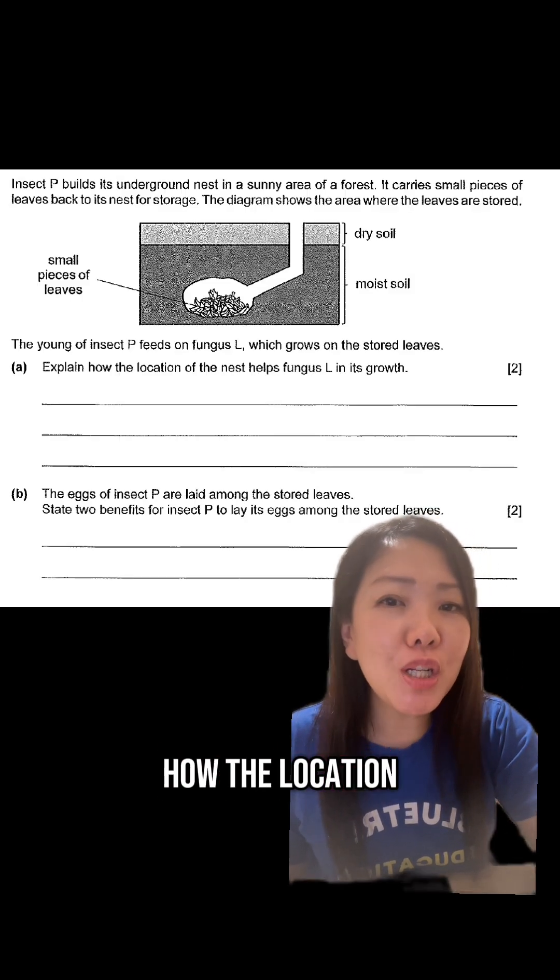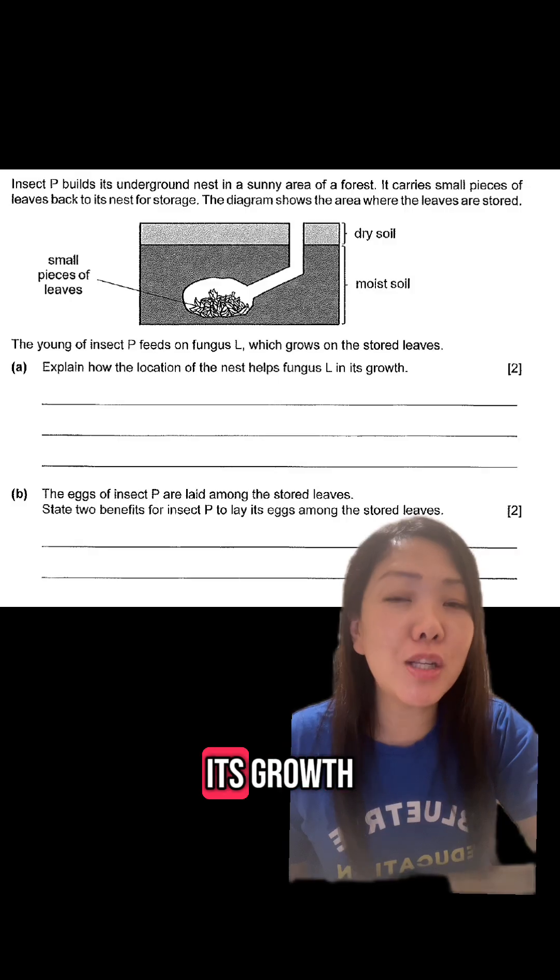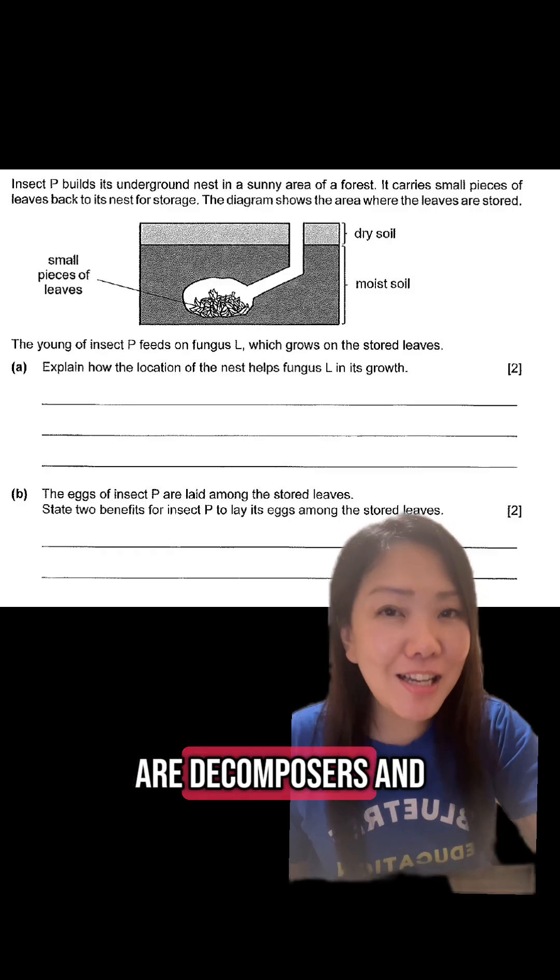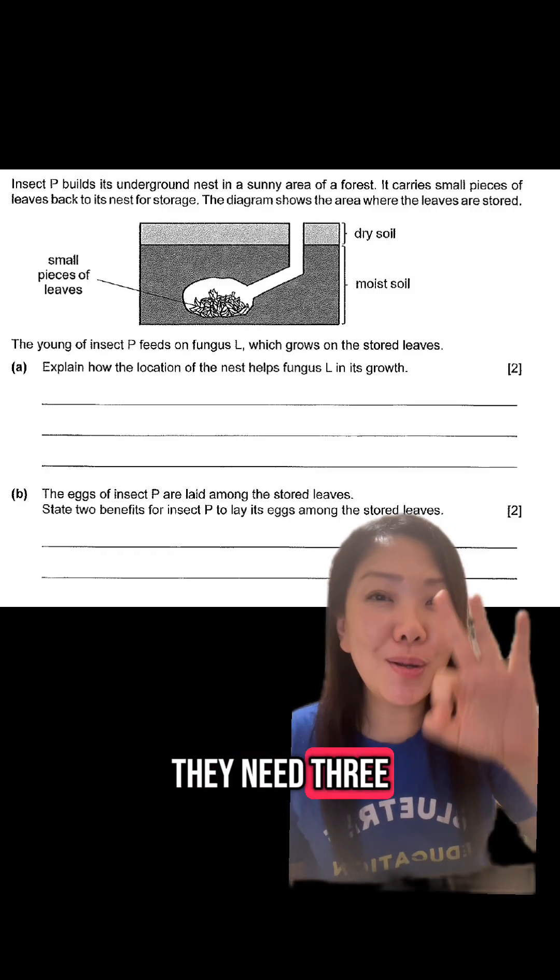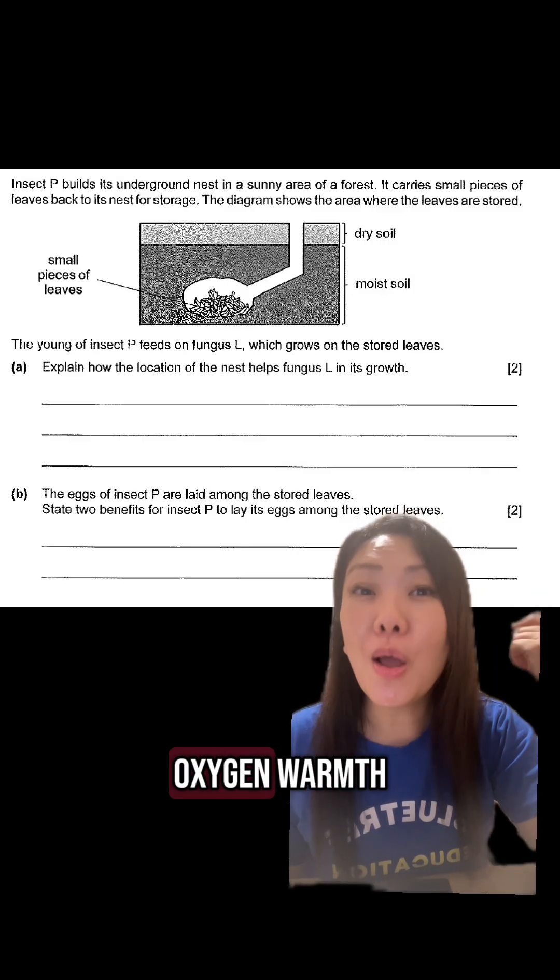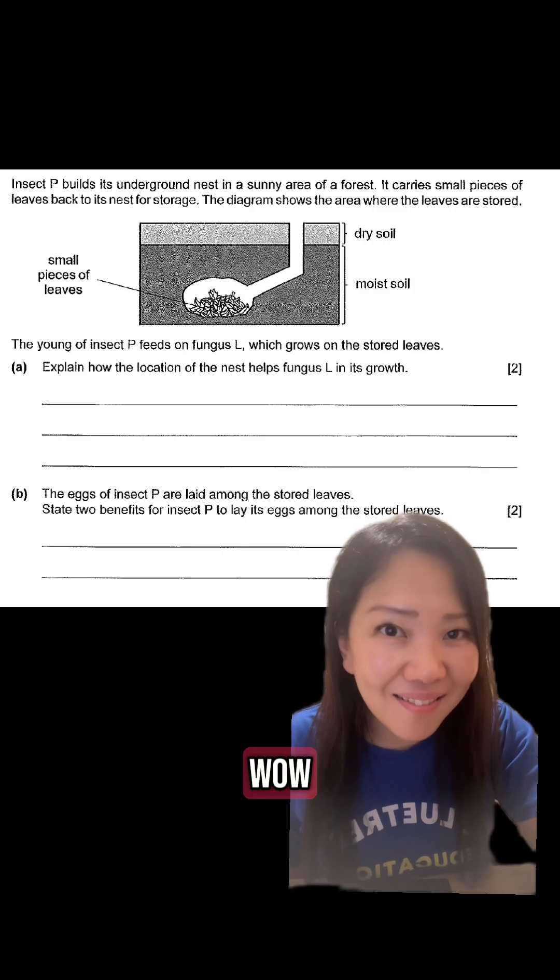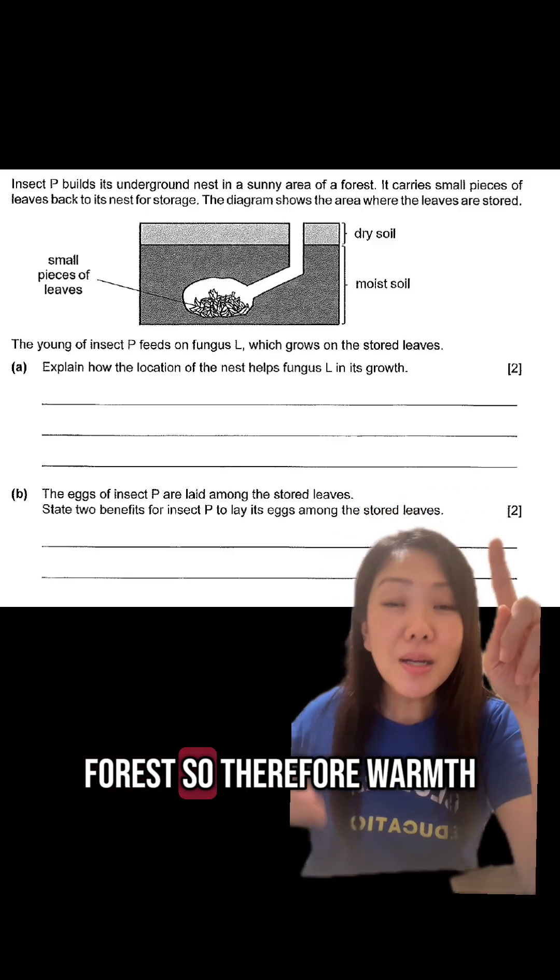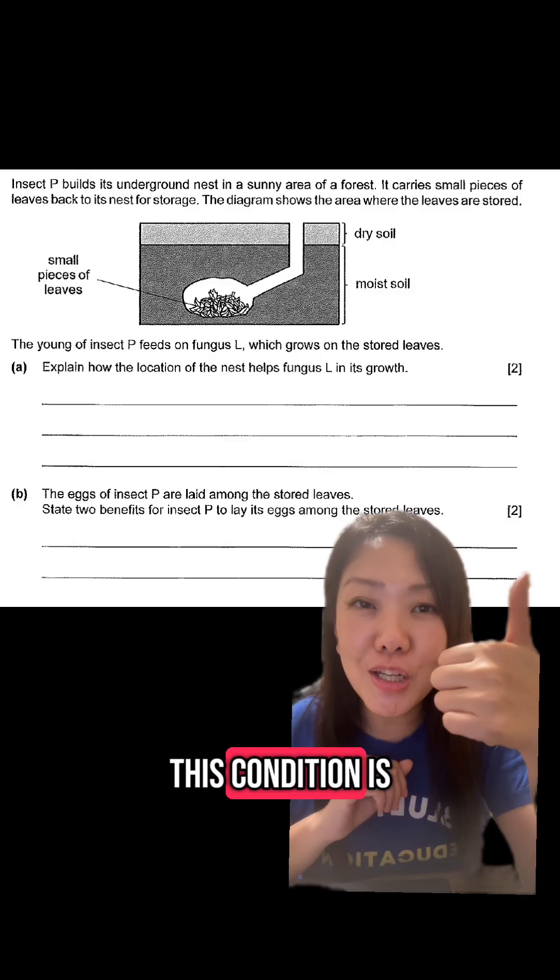So they ask how the location of the nest helps fungus in its growth. So we all know that fungi are decomposers and they need three things: water, oxygen, warmth. So the question says that this is a sunny part of the forest. So therefore, warmth, this condition is met.